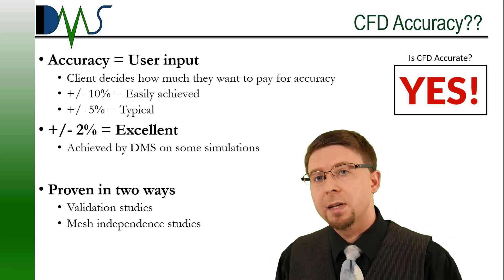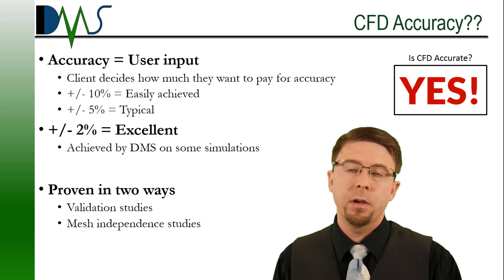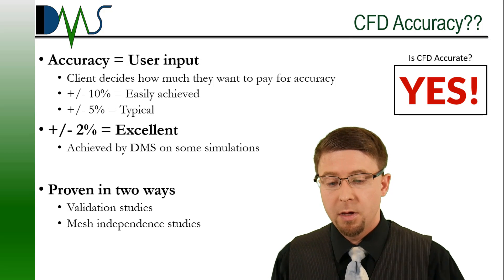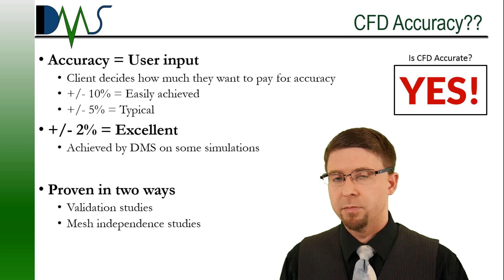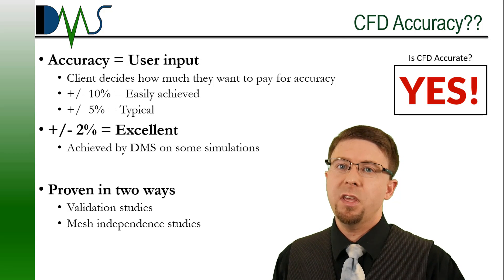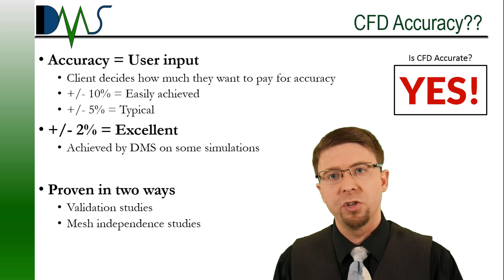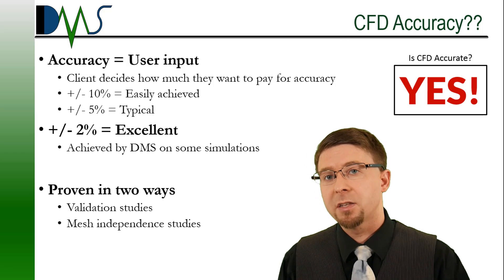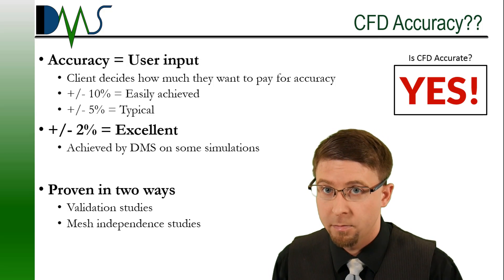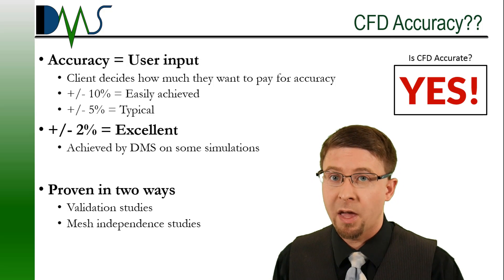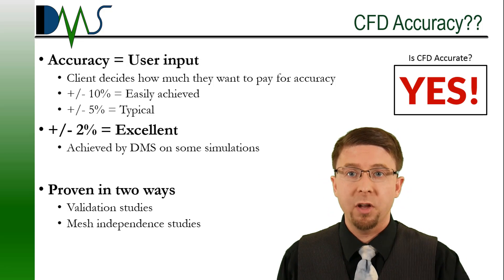So what kind of accuracy can you get out of CFD? You, as the client, actually get to decide how much accuracy you want to pay for. The higher accuracy you want, the more time we have to spend with the computer crunching the numbers. Plus or minus 10% — that's very easy to achieve for most CFD problems. In general, for industrial CFD, you should expect plus or minus 5%; I would say that's a typical requirement. Plus or minus 2% — that's excellent for a CFD simulation, and that is actually on the level of accuracy you get with an experimental setup as well. DMS has actually achieved that accuracy in some simulations. So it is achievable, and if you're concerned about it, ask for it, write it into your contract.